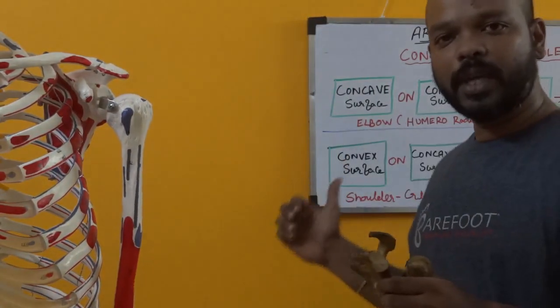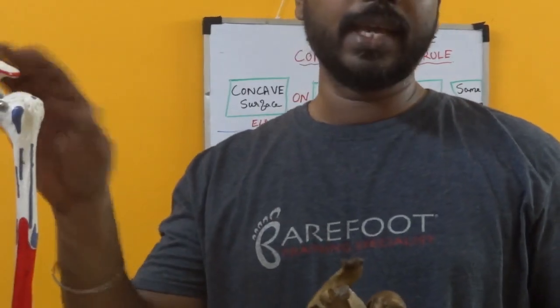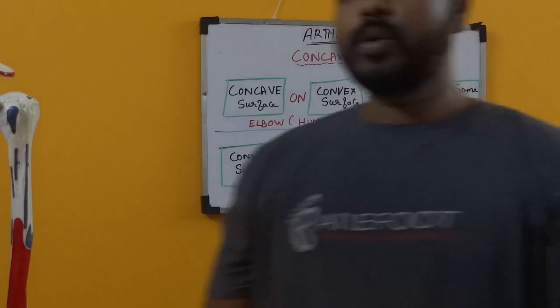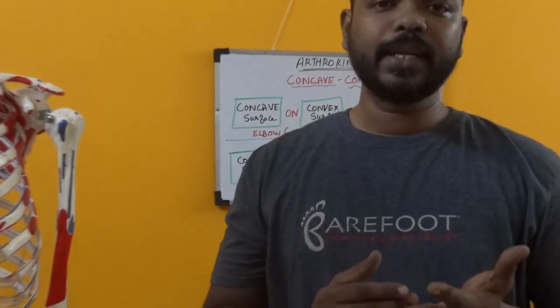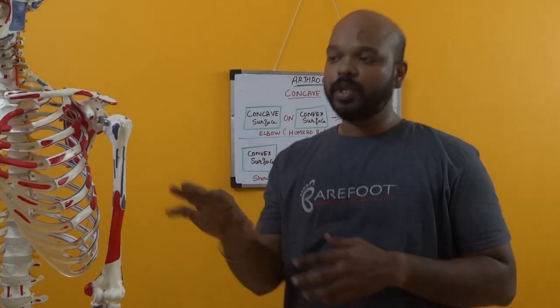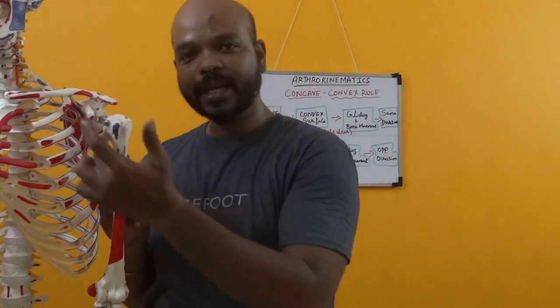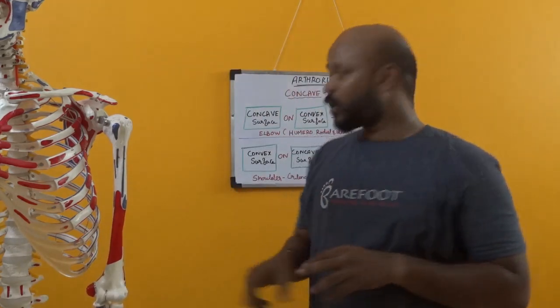This is all about osteokinematics, arthrokinematics, and applying the concave-convex rule on treating the joint. For these, you need to know the anatomy of the bony surfaces of each particular joint. Sometimes it will not be directly concave or convex — sometimes we have a saddle-type orientation. So you need to be careful about which orientation you are mobilizing in and which bone you are stabilizing. Take care of all those things.